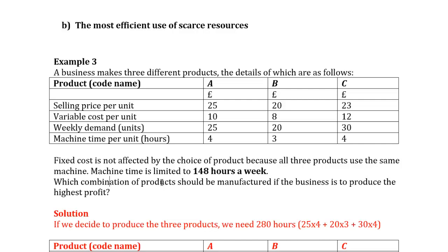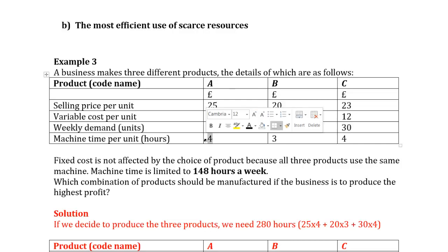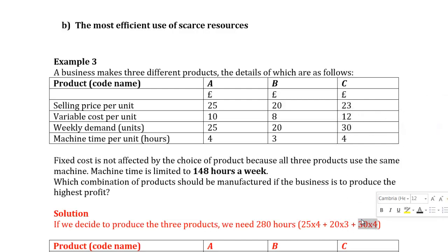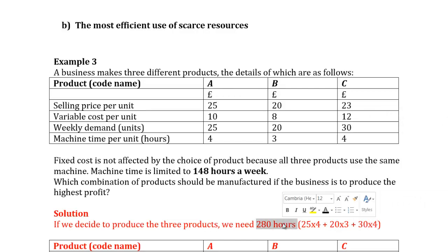The requirement is: which combination of products should be manufactured to produce the highest profit? To meet full market demand: 25 units of A × 4 hours = 100 hours; 20 units of B × 3 hours = 60 hours; 30 units of C × 4 hours = 120 hours. Total needed: 280 hours. But the maximum available is only 148 hours, so we must choose between products to maximize profit.